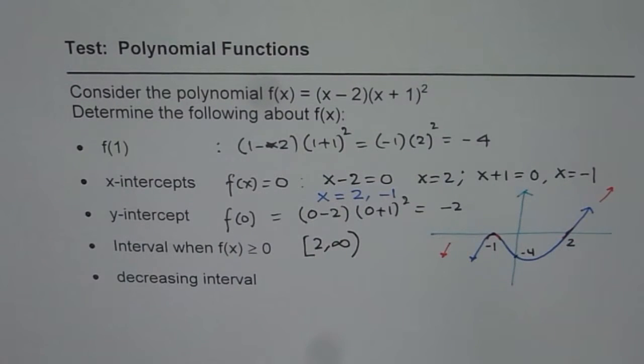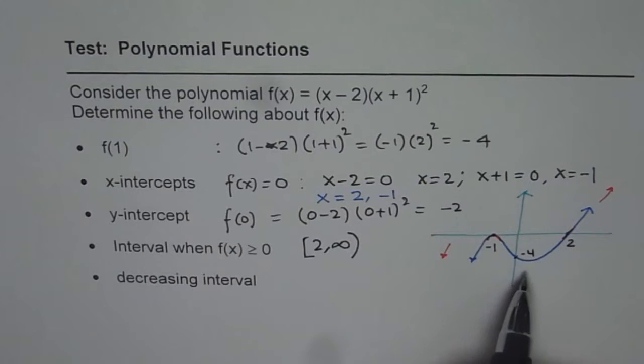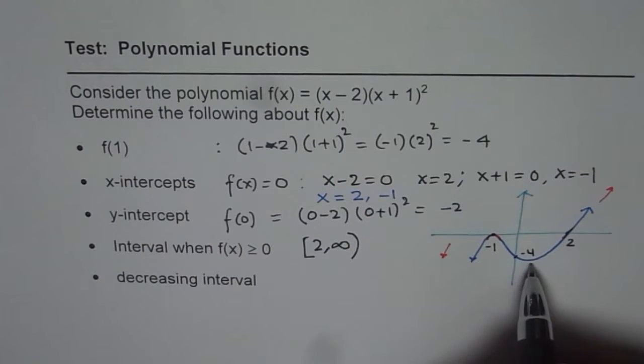And then the last question is decreasing interval. We have to see the graph from left to right and we can see that it is decreasing till this point. It is kind of very difficult to find the position where we have a minimum at this stage. So I have kept this question but it is not a very good question for this at the moment since we wanted to quickly go through these answers.